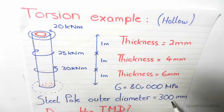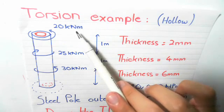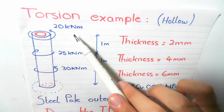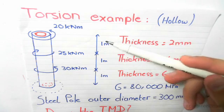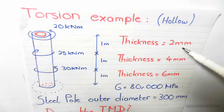The way this is divided is the top section has an anti-clockwise moment of 20kNm. It has a length of 1m and a thickness of 2mm.